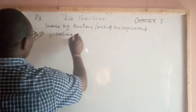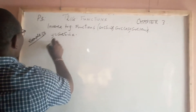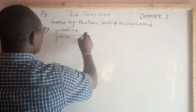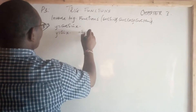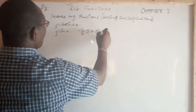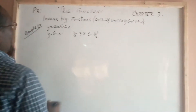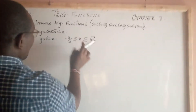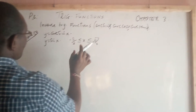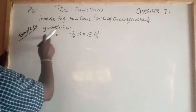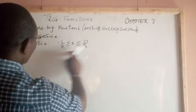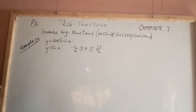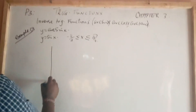Only one-to-one functions have inverses. We need y equals sine x for the range from negative π over 2 all the way to π over 2. The reason we use this range is because only within this range is the graph of y equals sine x a one-to-one mapping, and only one-to-one mappings have inverse functions.